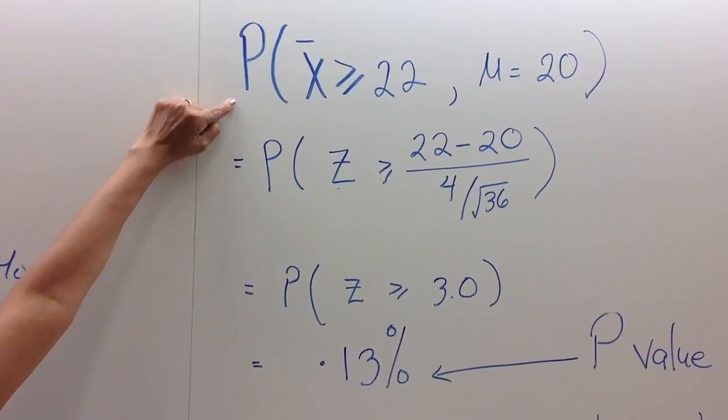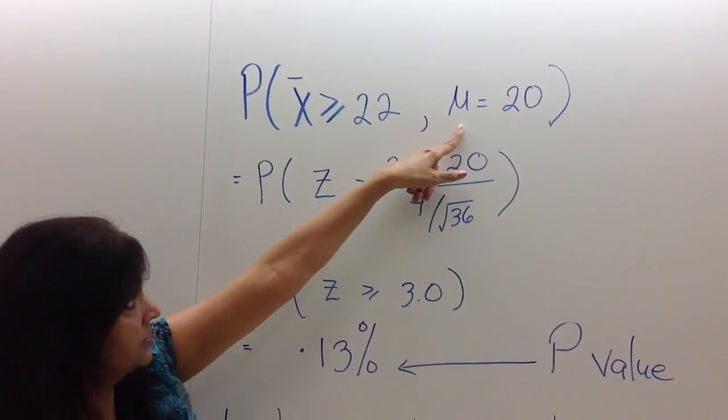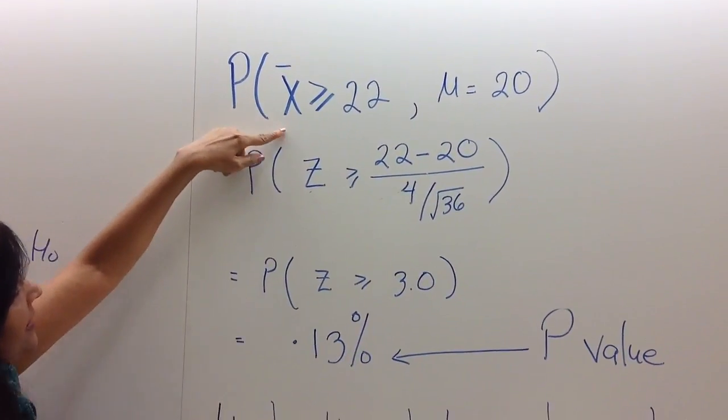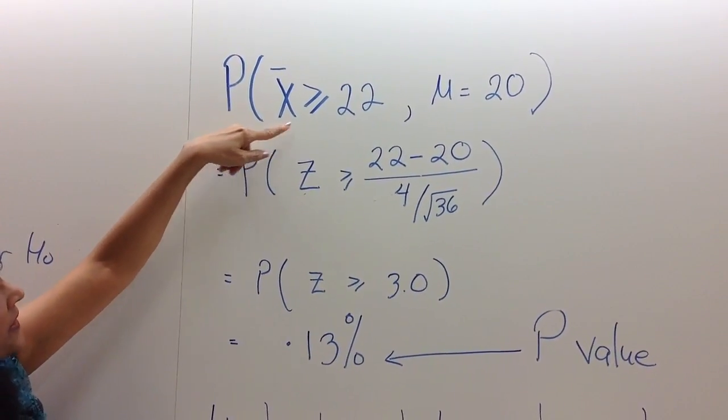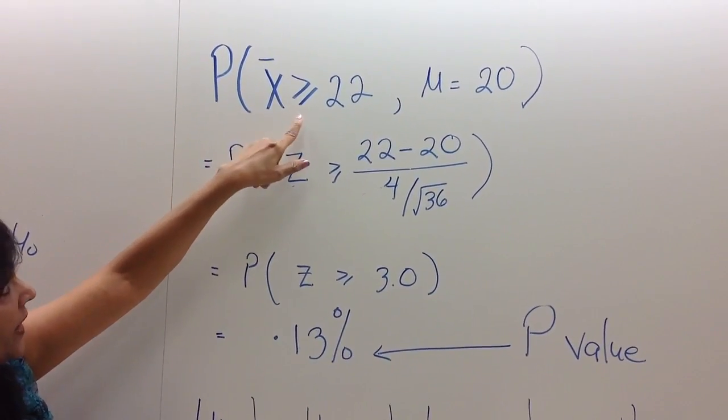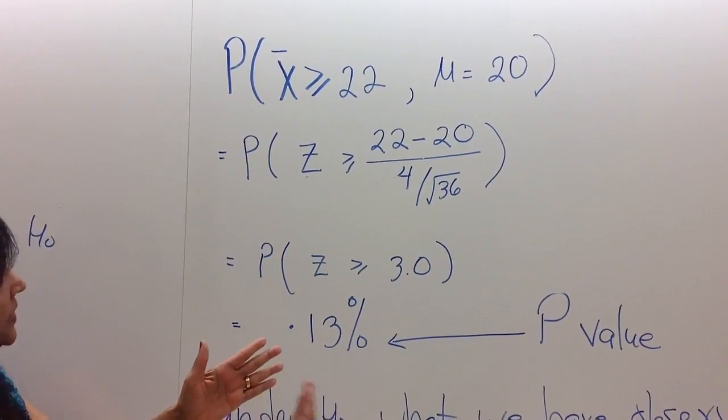So what I would like to calculate is that if the null hypothesis is true, if the population mean is actually 20, what is the likelihood that X̄ could be as high or higher than 22? Why higher? Because 22 is on the higher side, higher than 20.